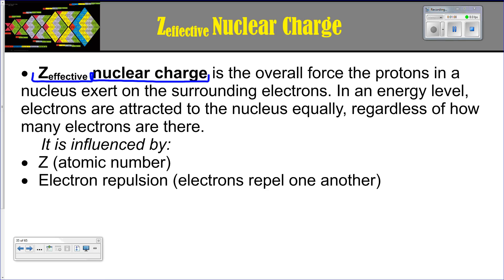The important thing to remember is that in one specific energy level, all the electrons in that energy level are going to be attracted to the nucleus equally. It doesn't matter if you've got one electron or nine electrons in that particular energy level — they're all going to be attracted to the nucleus with the same amount of attraction. Z effective nuclear charge is going to be influenced by two things: your atomic number, and electron repulsion. Electrons zipping around outside in the electron cloud are repelling one another as well, in addition to the attraction to the nucleus.